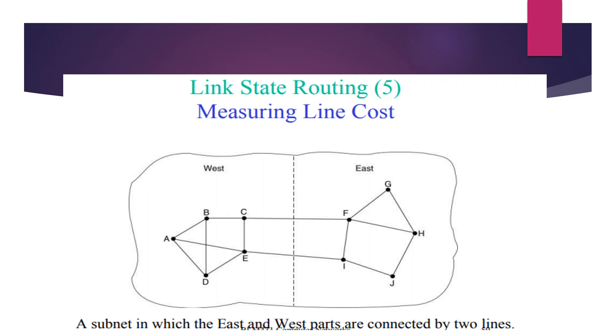The second phase is measuring the line cost. The link state routing algorithm requires each router to have at least a reasonable knowledge about the estimation of the delay to each of its neighbors. The most direct way to determine this delay is to send a special echo packet over the line that the other side is required to send back immediately. By measuring the round-trip time and dividing it by two, the sending router can get a reasonable estimate of the delay. For even better results, the tests can be conducted several times and the average is used.